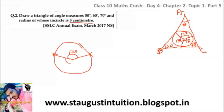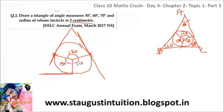The protractor reading should be 130 degrees. Automatically you will get the required triangle. This is the constructed triangle.